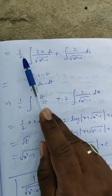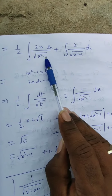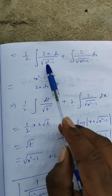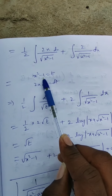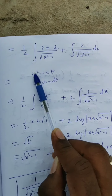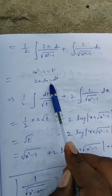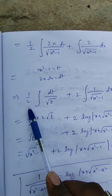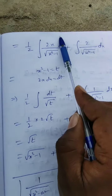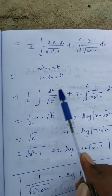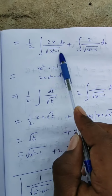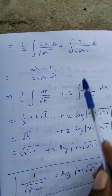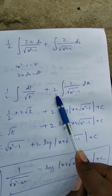Now let t = x² - 1. The differentiation of x² - 1 gives dt = 2x dx. So the 2x dx part can be replaced by dt. The integral splits: the first part with 1/2 · (2x dx)/√t gives (1/2) · dt/√t, and the second part involves 2 upon under root of (x² - 1).